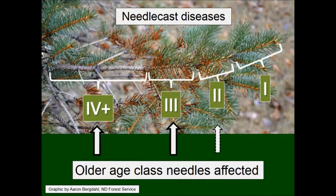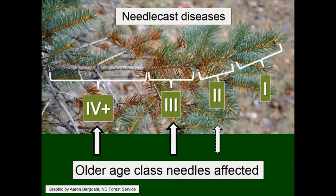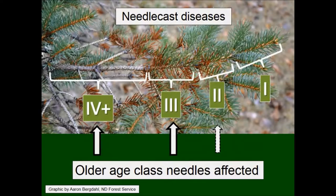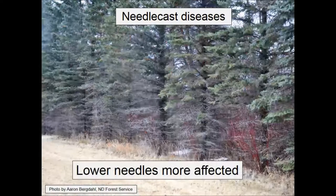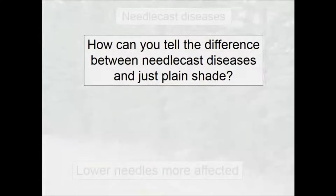Needle cast diseases show symptoms like bare lower branches and bare interiors. On an individual branch, the most recent year's growth looks fine; go in one year and needles are still there; third-year needles are mostly gone; fourth-year needles are totally gone. You need to look at the different age classes of needles. Spruce trees should hold their needles for roughly five to seven years, so if they're losing them earlier, that could be a problem. The lower branches are typically more affected.